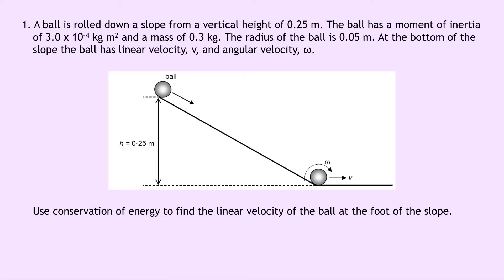So we're trying to calculate v. Now the first thing to notice is that as the ball is rolling down the slope, it's going to have a rotational kinetic energy because it's rotating, but it's also moving linearly down the slope. So it's also going to have a linear kinetic energy, also known as a translational kinetic energy.